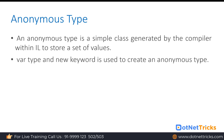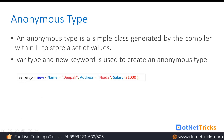In C#, the anonymous type we can create using the var keyword and the new keyword. We use var type with the new keyword, and that is actually going to create an anonymous type. Here we are creating an employee variable using the var keyword, and instead of creating a class employee, we are creating an anonymous type.